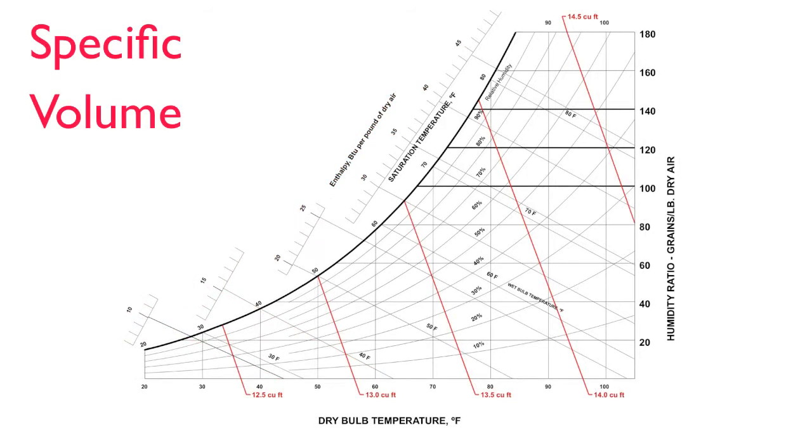Specific volume is shown by the red oblique lines equidistant from each other. This is in contrast to the wet bulb temperature lines. With wet bulb temperature, the angle is wider and the distance between the lines increases proportionately from lower left to upper right.